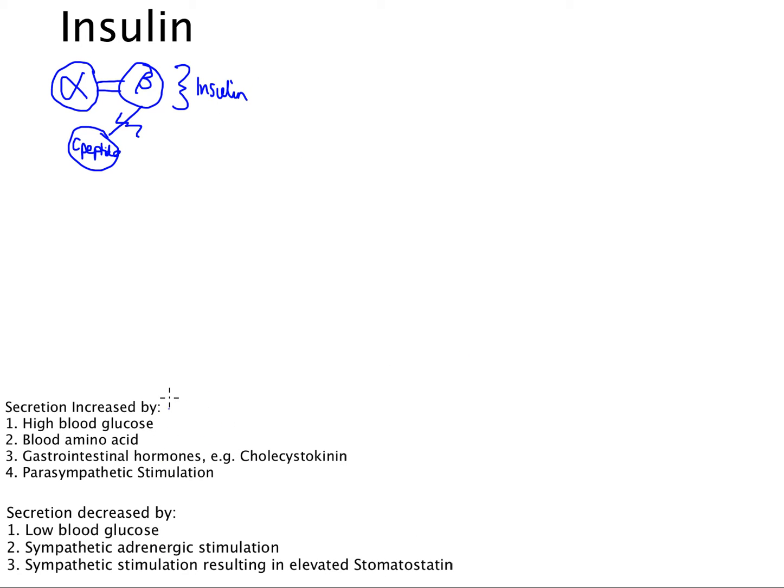We next have our mechanisms for decreased insulin secretion. Contrasting to the main mechanism for increased secretion, which is high blood glucose, the main mechanism for decreased secretion is low blood glucose. We also have direct sympathetic adrenergic stimulation of beta cells, which can result in inhibition of insulin secretion. In addition, sympathetic adrenergic stimulation increases glucagon secretion, which results in elevated somatostatin, which results in decreased insulin secretion.